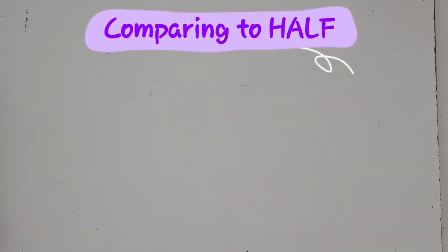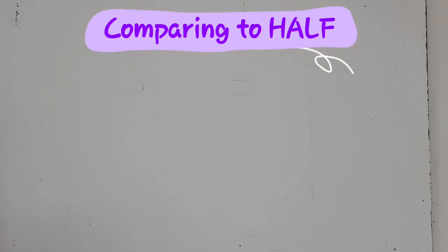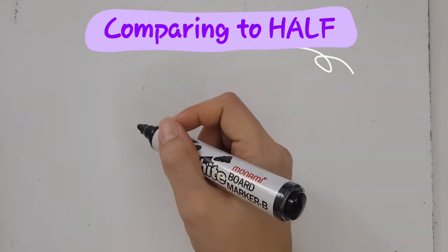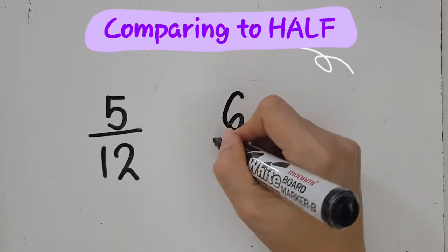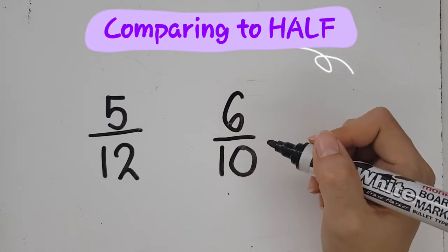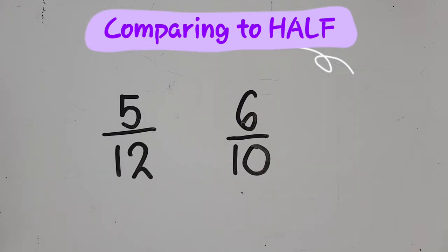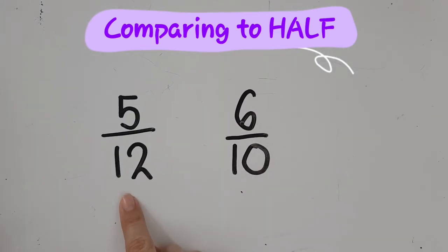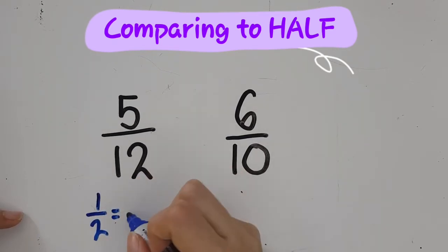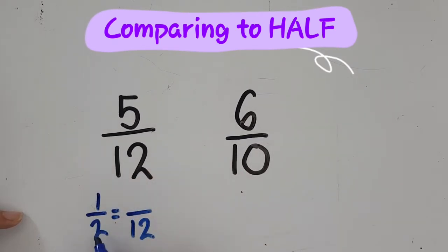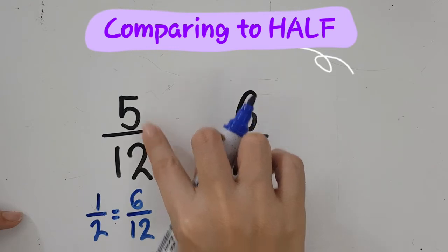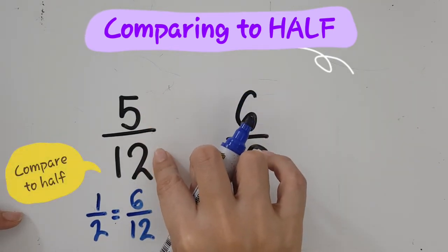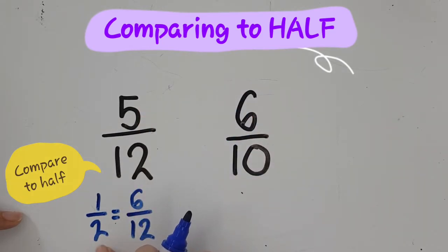The fourth method to compare fractions is to compare to half. This is by far my favourite method because it requires very little working, and some people can even do it in their heads. For example, if I have five-twelfths and six-tenths, and I want to compare these two fractions — which one is greater and which one is smaller? Let's start with five-twelfths. When we compare this to half, one half is equivalent to six-twelfths. I have five-twelfths, and five-twelfths is less than six-twelfths. Therefore, five-twelfths is less than half, so I'm going to put an L.